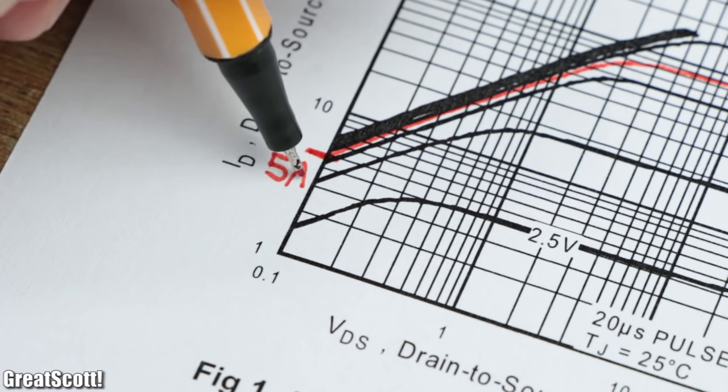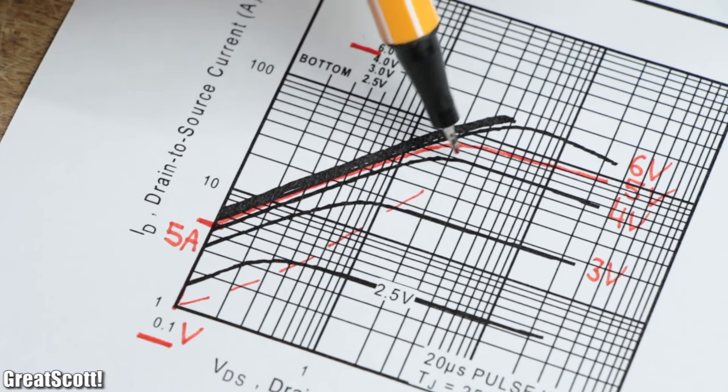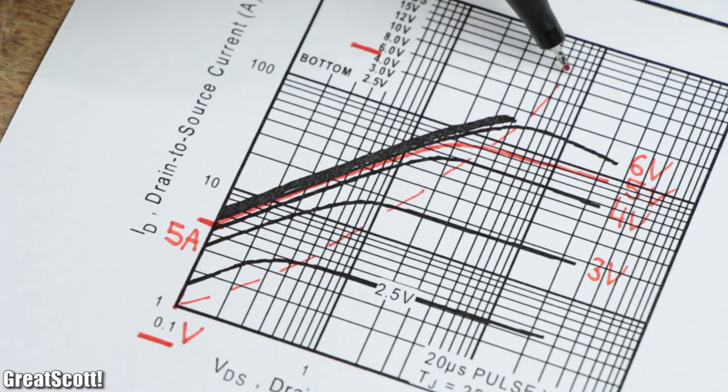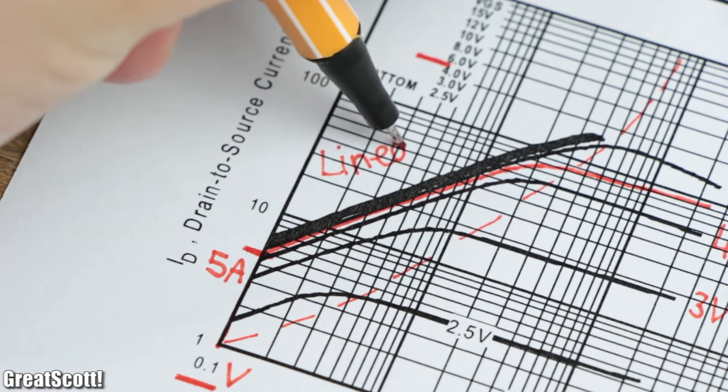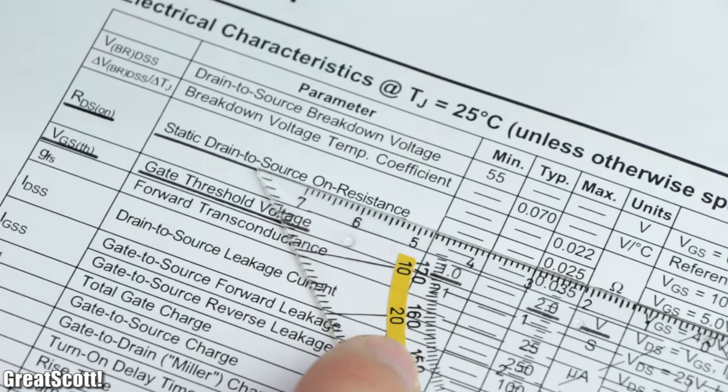The region we use here in the output characteristic curves is called the linear region, in which the resistance of the drain-to-source path is almost constant.